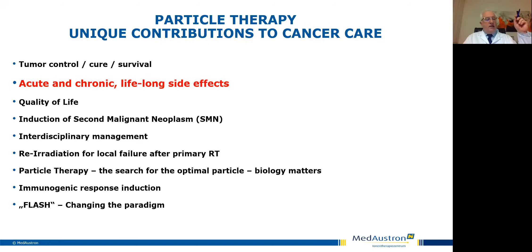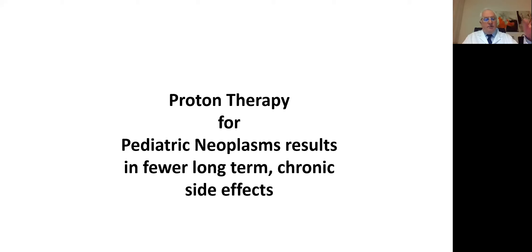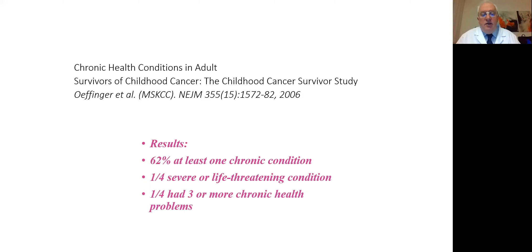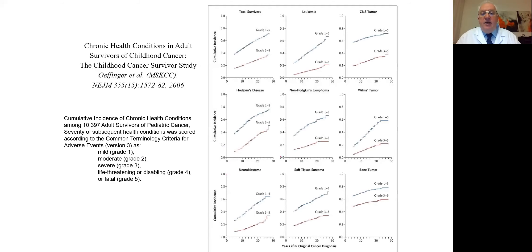When we talk about lifelong side effects, we are primarily talking about proton therapy for pediatric neoplasms. From the landmark 2006 childhood cancer survivor study, when looking at the outcome of adults who survived pediatric cancer, more than 60% had at least one chronic condition as a result of treatment, and a quarter had severe or life-threatening conditions. Plotting this against time — with data out to 25 years after radiation — you actually see that this is the gift that keeps on giving; it just doesn't stop across various organs.